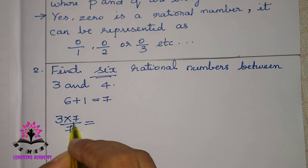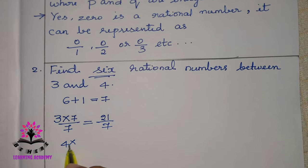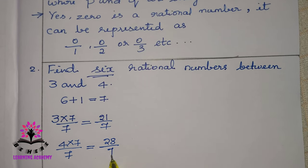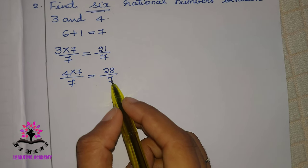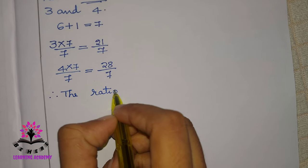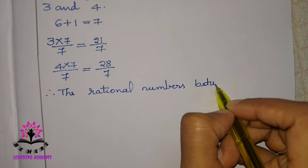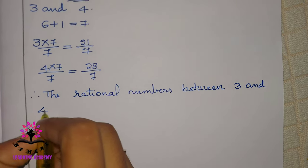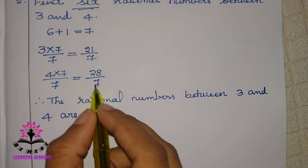3 times 7 is 21, so 3 becomes 21 by 7. Next, take 4 and multiply and divide by 7. 4 times 7 is 28, so 4 becomes 28 by 7. So we have got 21 by 7 and 28 by 7.